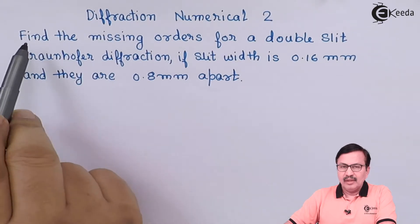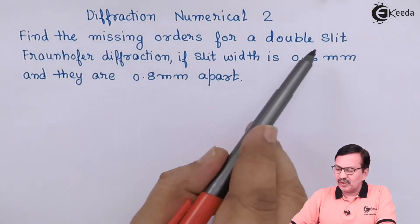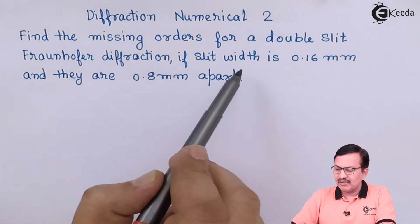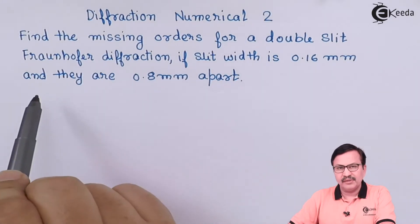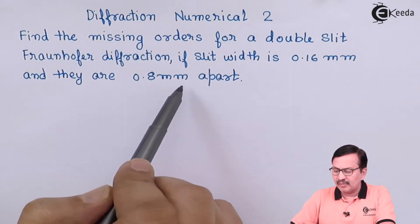Here is the problem. Find the missing orders for a double slit Fraunhofer diffraction. If the slit width is 0.16 mm and they are 0.8 mm apart.